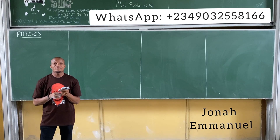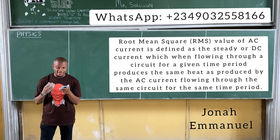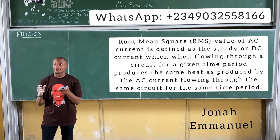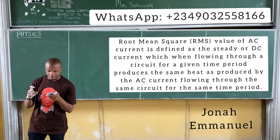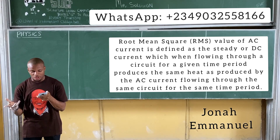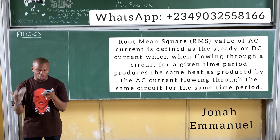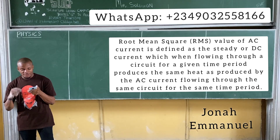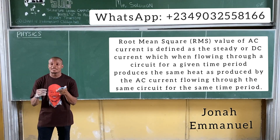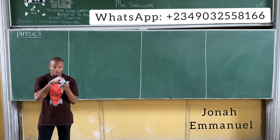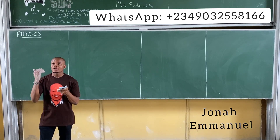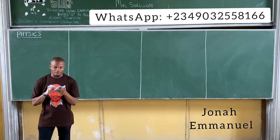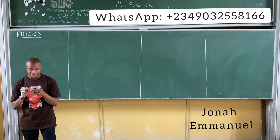For example, RMS — the root mean square of an AC — is the steady or DC current which, flowing through a circuit for a given time period, produces the same heat as produced by the AC current flowing through the same circuit for the same time period. RMS value is also called the effective value or virtual value of an AC current.